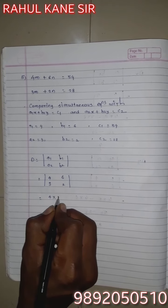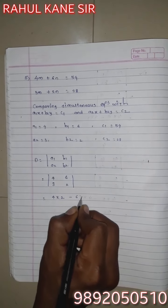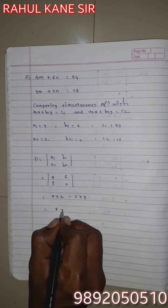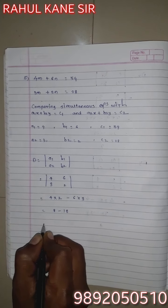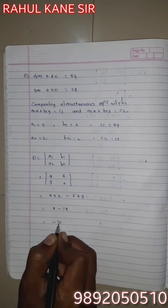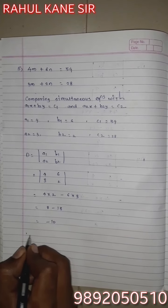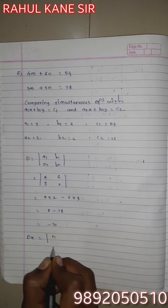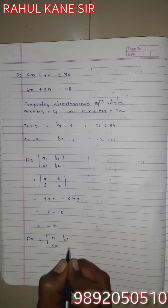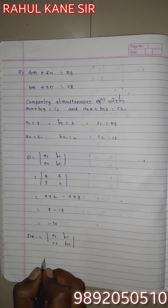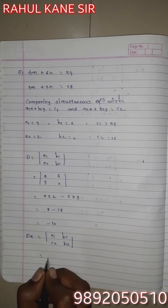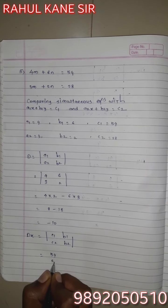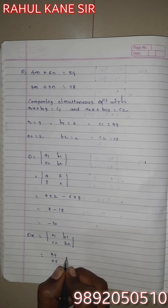By cross multiplication: 4×2 minus 6×3. Fours twos are 8, sixes threes are 18. 8 minus 18 equals -10.